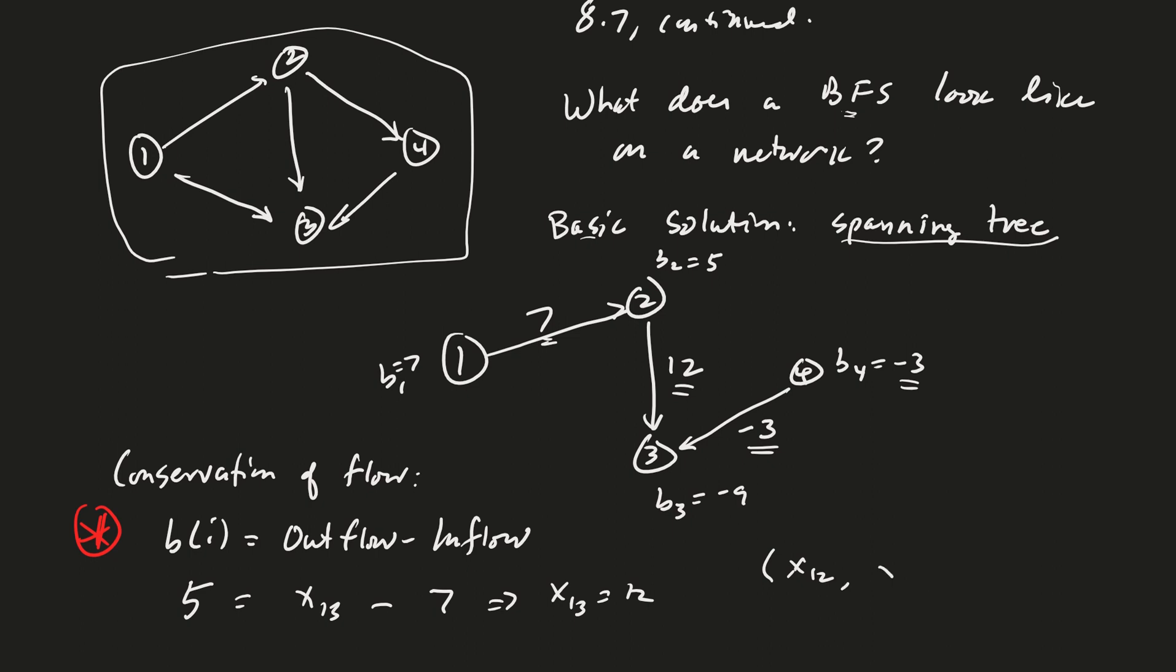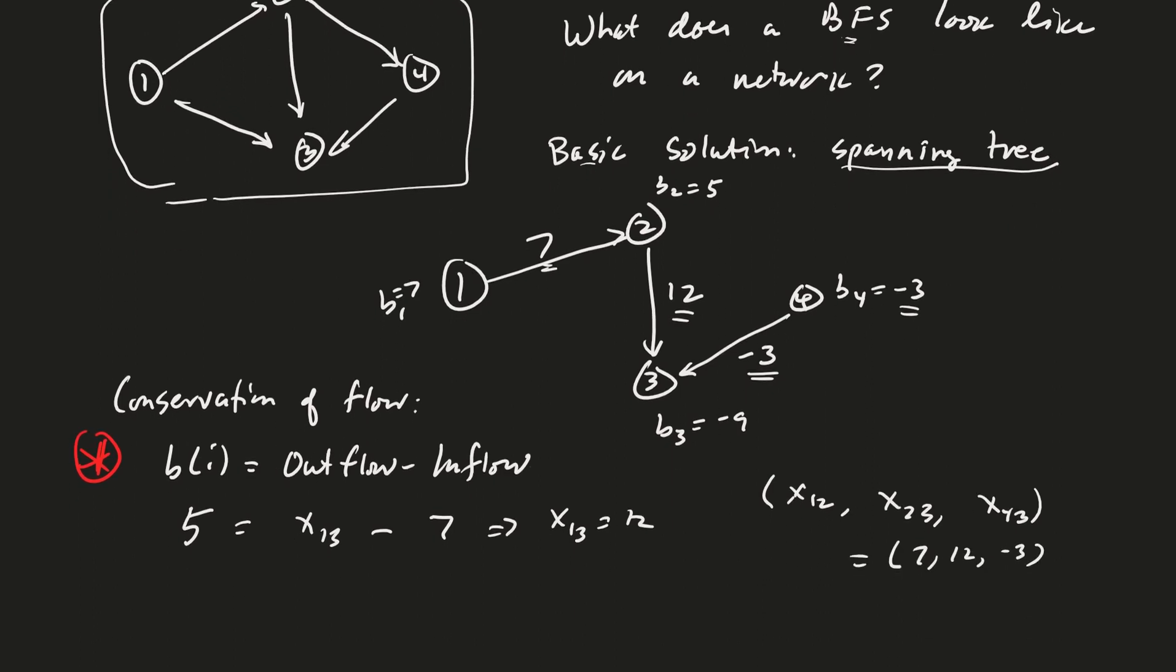So the X1, 2, X2, 3, X4, 3 equals 7, 12, minus 3 is basic for this problem, but not feasible because of the negative 3.